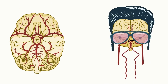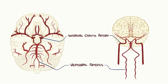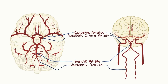The brain receives blood from the left and right internal carotid arteries, as well as the left and right vertebral arteries, which come together to form the basilar artery. The internal carotid arteries turn into the left and right middle cerebral arteries, which serve the lateral portions of the frontal, parietal, and temporal lobes. Each of the internal carotid arteries also gives off branches called the anterior cerebral arteries, which serve the medial portion of the frontal and parietal lobes, and connect with one another via a short connecting blood vessel called the anterior communicating artery.